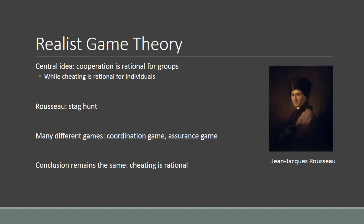Game theory itself does not take sides very much in international relations theories. However, initially it seemed as if it was very much in the realist camp. This was because of the way in which game theory produces outcomes that are contrary to collective rationality. The central idea is that for the group of actors to cooperate may be the rational choice, but for each individual actor it may be much more attractive to actually cheat and not cooperate.